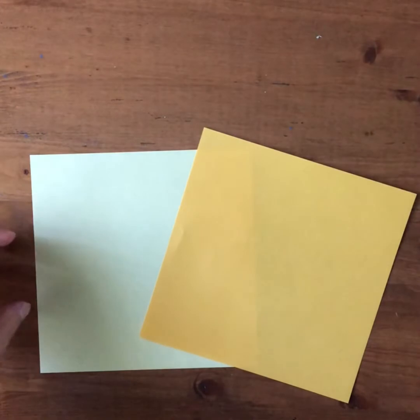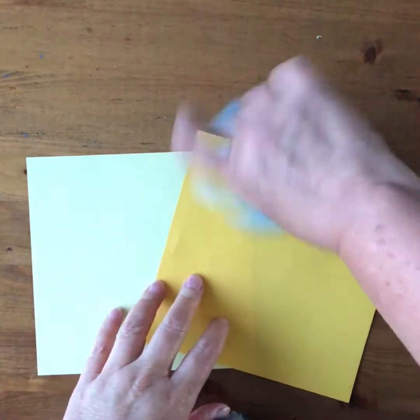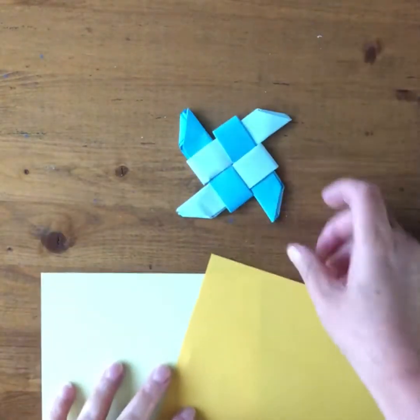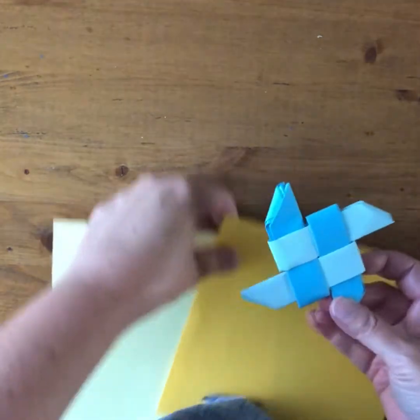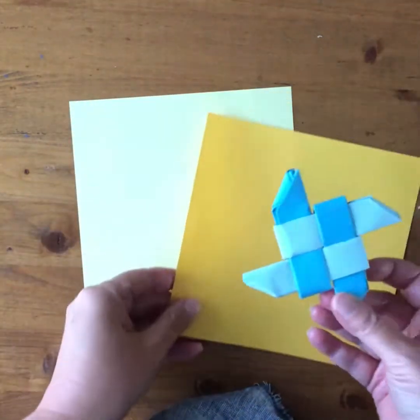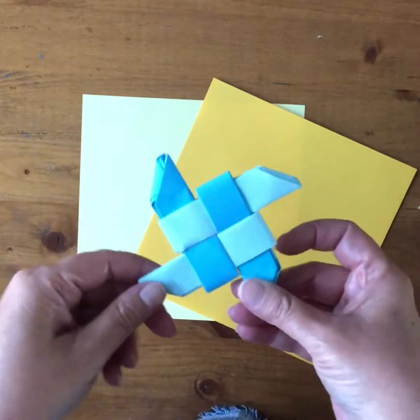So to make the Japanese spinning star, there it is spinning away, you need four pieces of paper and using two different colors gives you a nice design here when it's woven together.